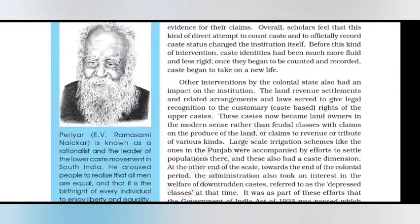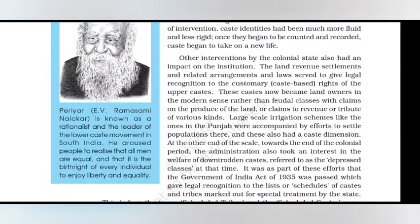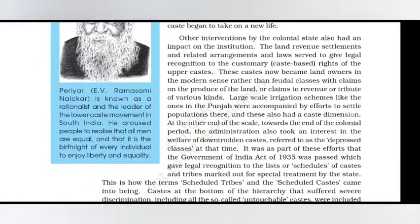The 1901 census under Herbert Risley was particularly important, as it sought to collect information on the social hierarchy of caste and the order of precedence in particular regions. This effort had a huge impact: hundreds of petitions were addressed to the census commissioner by representatives of different castes claiming a higher position in the social scale and offering historical and scriptural evidence for their claims. Scholars feel that this direct attempt to count and officially record caste status changed the institution itself — before this intervention, caste identities had been much more fluid and less rigid.